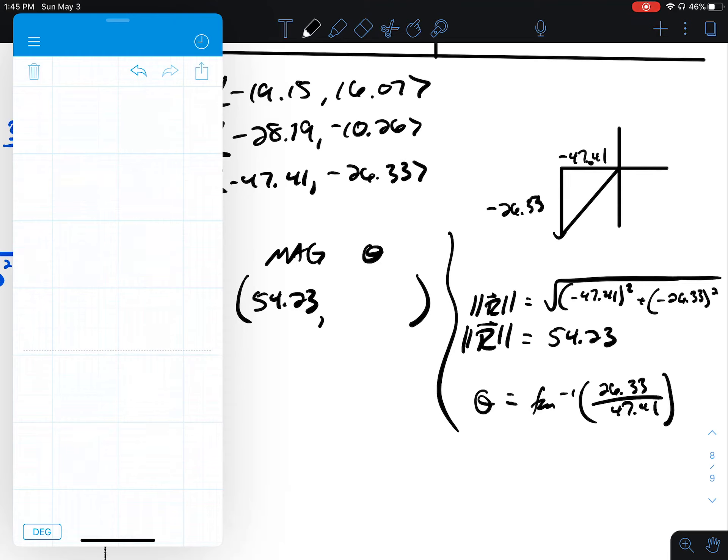See what this gives me in my calculator. We can reason out if this makes sense. Tangent inverse 26.33 divided by 47.41.